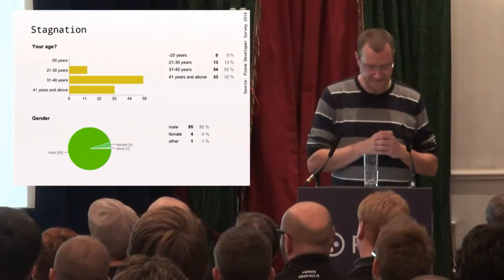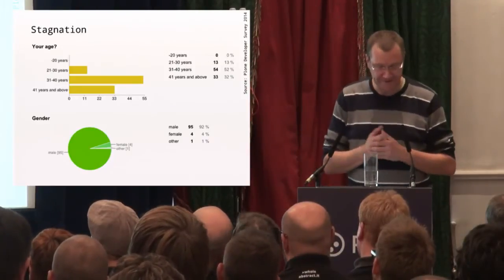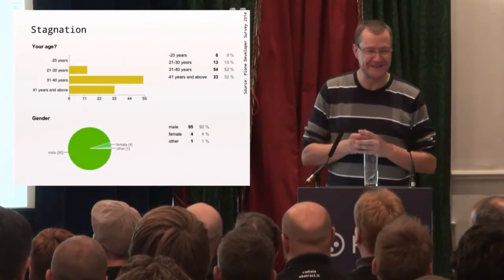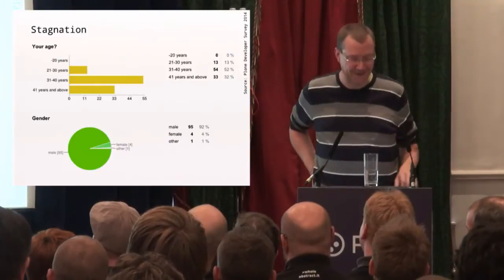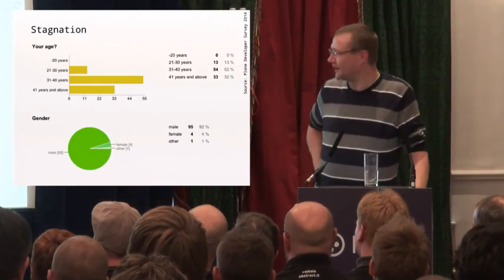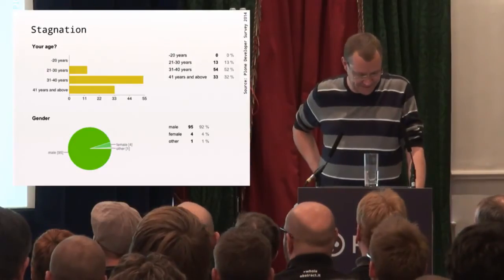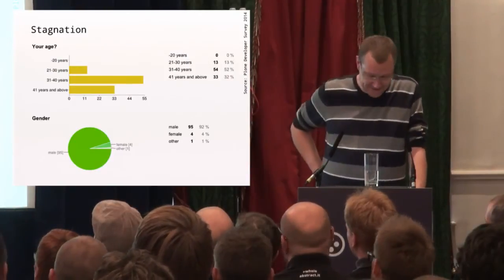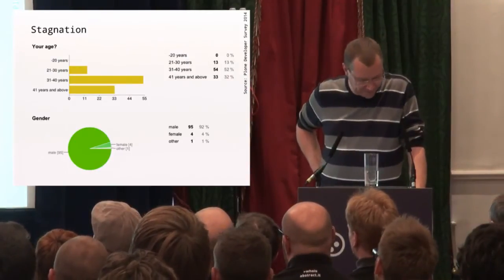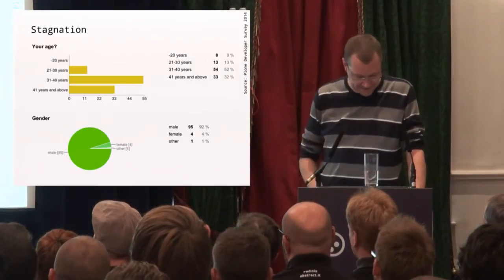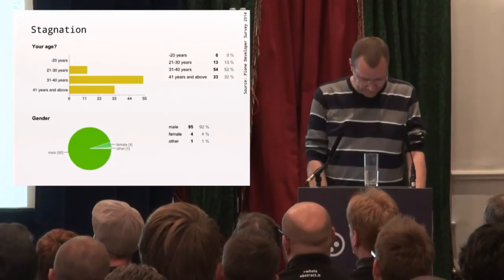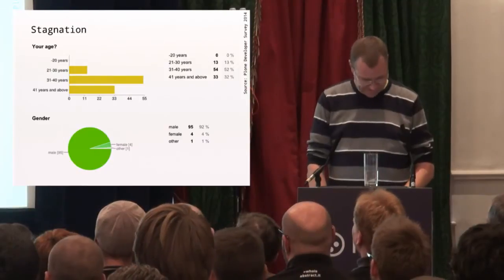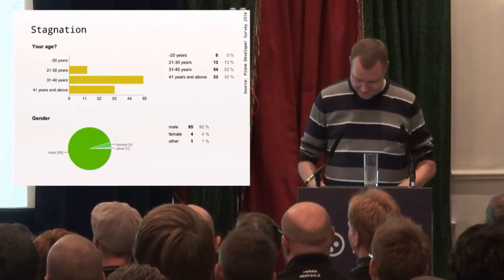About demographics: the majority of the community are well beyond 31 years old — not old, but at least senior developer level. That's perhaps a lot of people who started with Plone 10 years ago and are now 10 to 15 years older. There's a huge gap — no one under 20, and only about 7–10% between 20 and 30.